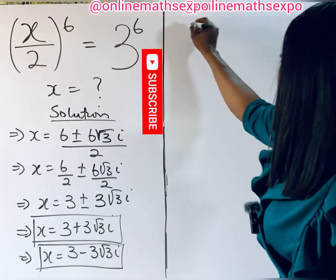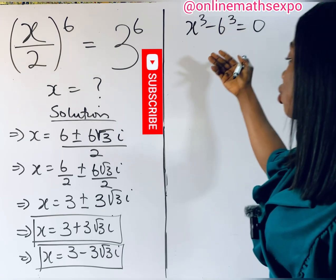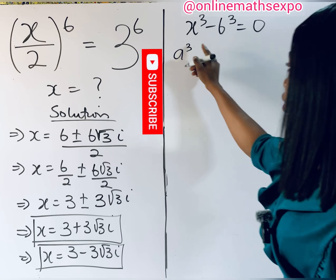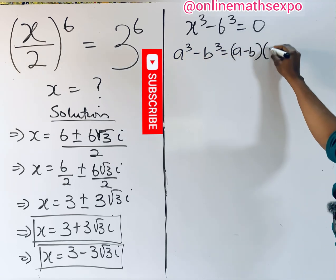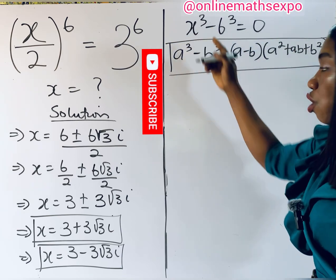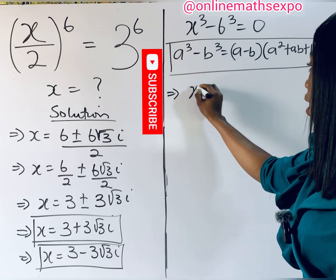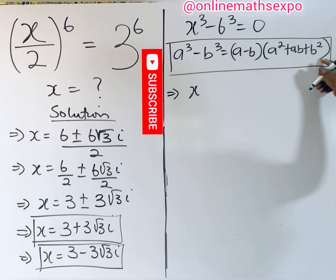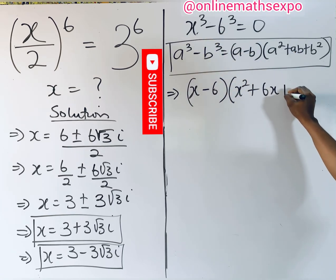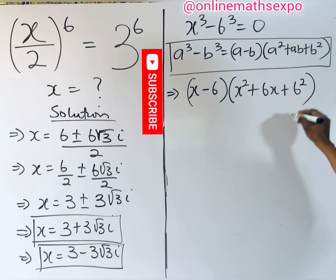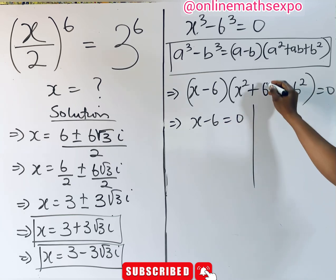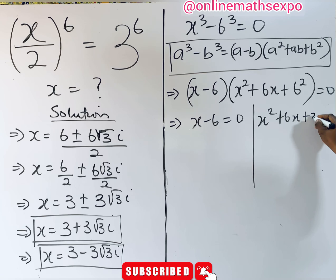Now let's solve x³ − 6³ = 0. This uses the difference of two cubes: a³ − b³ = (a − b)(a² + ab + b²). With a = x and b = 6, we get (x − 6)(x² + 6x + 36) = 0. So either x − 6 = 0 or x² + 6x + 36 = 0.